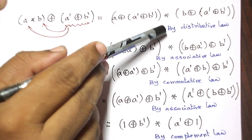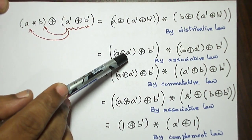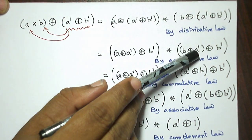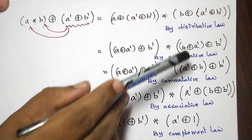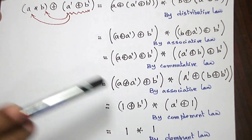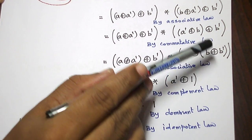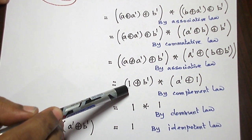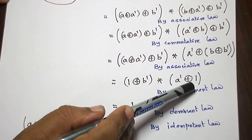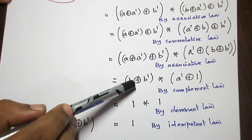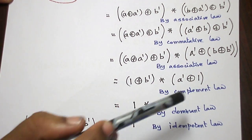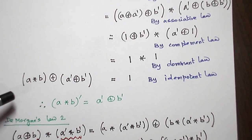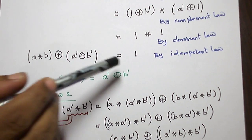Change the bracket using associative law to get A plus A dash. Similarly, change the bracket using associative law to get B plus A dash. Then B plus A dash is changed by commutative law to A dash plus B. Again change the bracket using associative law to get B plus B dash. A plus A dash by complement law is 1. Similarly, B plus B dash is 1. By dominant law, 1 plus B dash is 1, and A dash plus 1 is 1. Then 1 star 1 by idempotent law is 1.